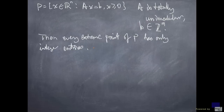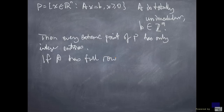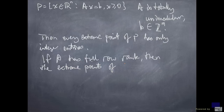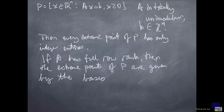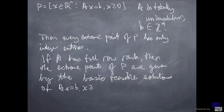Why is this true? Extreme points of P are precisely the basic feasible solutions, as long as A has full row rank. So if A has full row rank, then the extreme points of P are given by the basic feasible solutions of the system Ax equals b, x greater than or equal to 0.